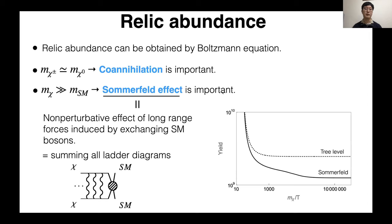And when dark matter is much heavier than standard model particles, Sommerfeld effect is important. This is a non-perturbative effect of long-range force induced by exchanging standard model bosons. In the language of diagrams, this can be understood as summing all ladder diagrams like this. Sommerfeld effect enhances the annihilation cross-section, and from this figure, we can find that Sommerfeld effect reduces the abundance compared to the tree-level calculation.